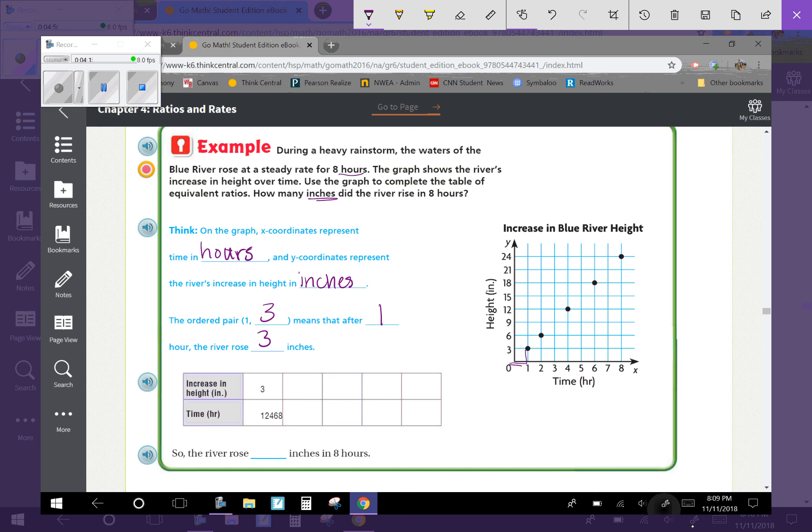I used that graph - I see it went over 1 and up 3. Down here on the graph they have the time in hours is 1 hour for 3 inches. So we're going to do 2 hours and 6 inches, 4 hours would be 12 inches, 6 hours would be 18 inches, 8 hours is 24 inches.